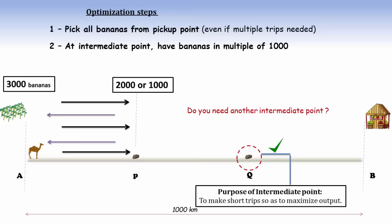With that intention, we would be happy to have another drop point. But at the same time, we should verify that it complies with the optimization step number 2 which says to have bananas in multiple of 1000 which in this case is possible.